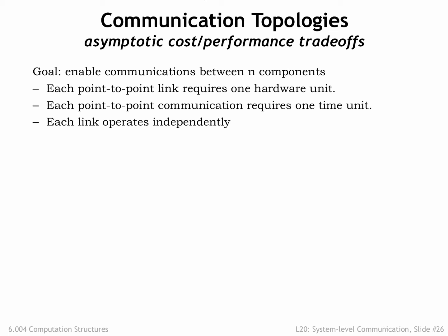We'll build our communications network using point-to-point links. In our analysis, each point-to-point link is counted at a cost of one hardware unit. Sending a message across a link requires one time unit, and we'll assume that different links can operate in parallel, so more links will mean more message traffic.